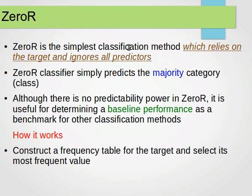This classifier relies on the target and ignores all predictors. If you remember from the last videos, we saw the weather dataset. We mentioned that we had four predictors or four features. The ZeroR only focuses on the class and it does not actually care about the predictors or the features.